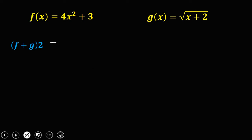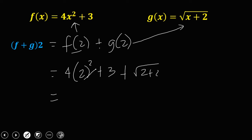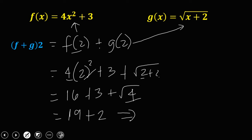Now for f(2) + g(2), x is equal to 2. Substituting into f(x): 4 times 2 squared plus 3, plus g(2): √(2 + 2). Simplifying: 2 squared is 4, times 4 is 16, plus 3 is 19, and √4 is 2. So the answer is 19 + 2 = 21.